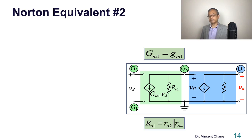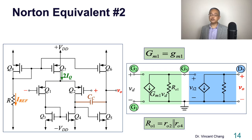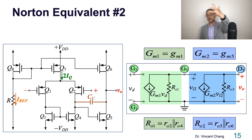Second stage is easy, common source. You don't need me for this. The capital GM2 is the individual transconductance of Q5. There's another negative sign. Both negative signs got canceled out.